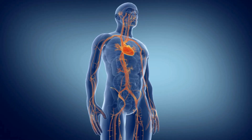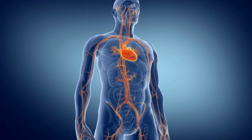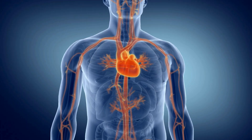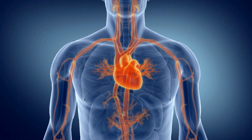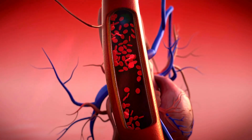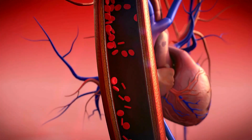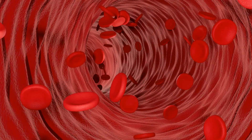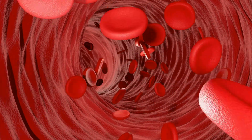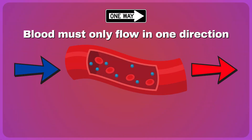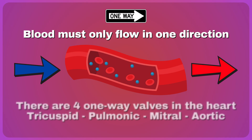Let's briefly talk about normal physiology. Your circulatory system is a continuous, closed network of blood vessels — basically a bunch of pipes — that carry blood throughout your entire body. It is designed so that blood can only flow in one direction. The body has a bunch of one-way valves; there are four one-way valves in the heart and many more throughout all of your veins.